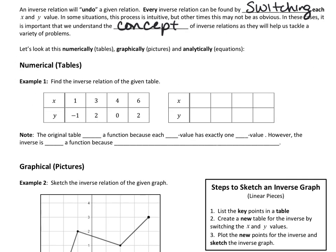From a table, to find the inverse relation of a given table, all we have to do is switch the x and y values. That first input value was 1, negative 1 — so I just switch it, now it's negative 1, 1. We had 3, 2 — so now we have 2, 3. Then we have 0, 4 and 2, 6. We just switch the x and y values. That's its inverse.